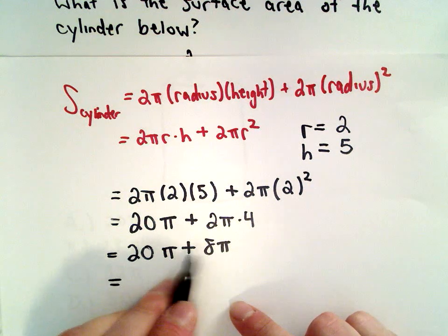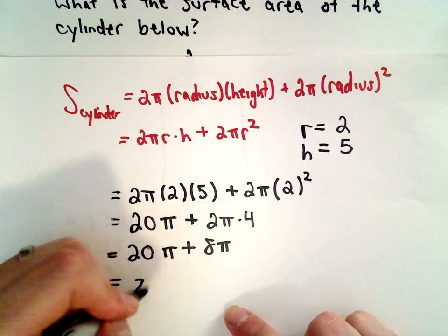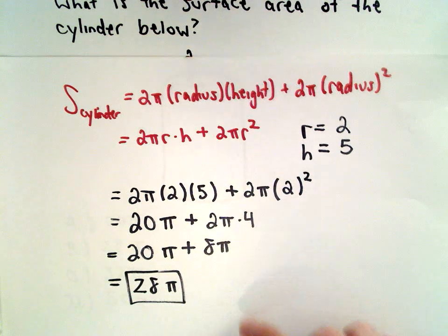And if we add 20π plus 8π, that's going to give us 28π as our solution.